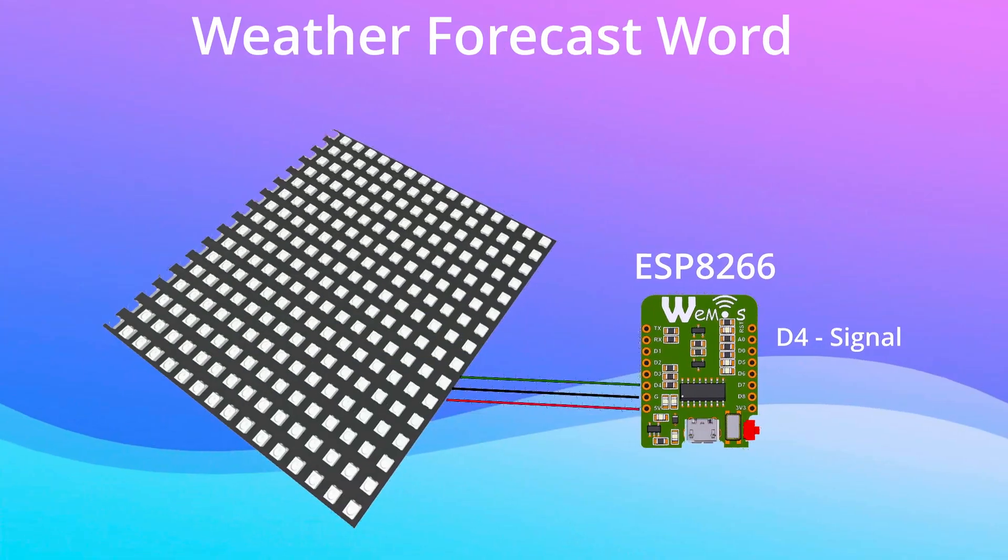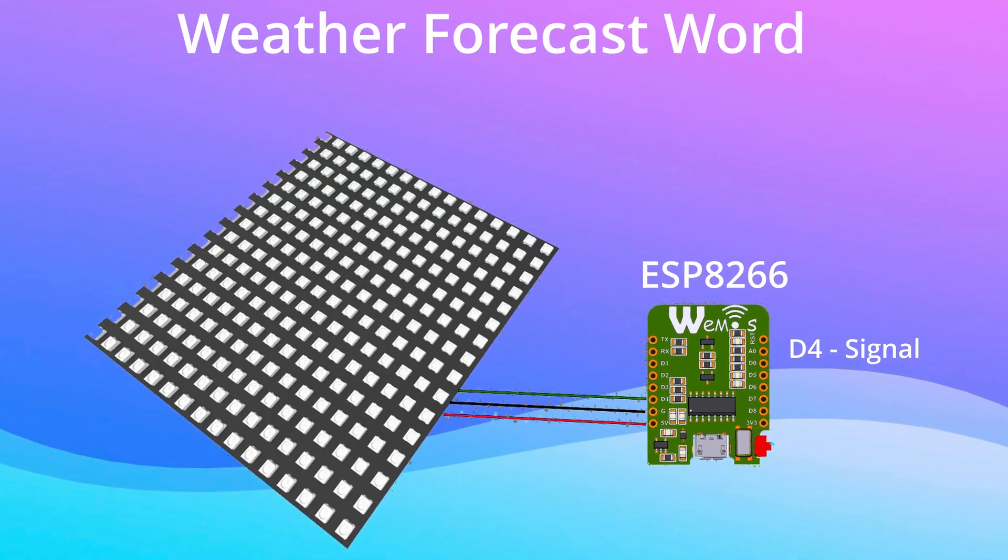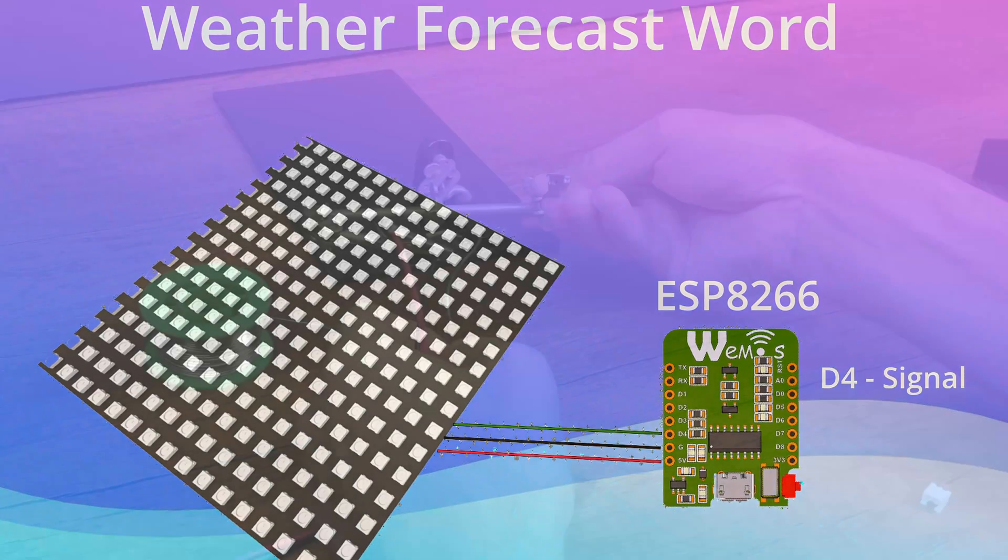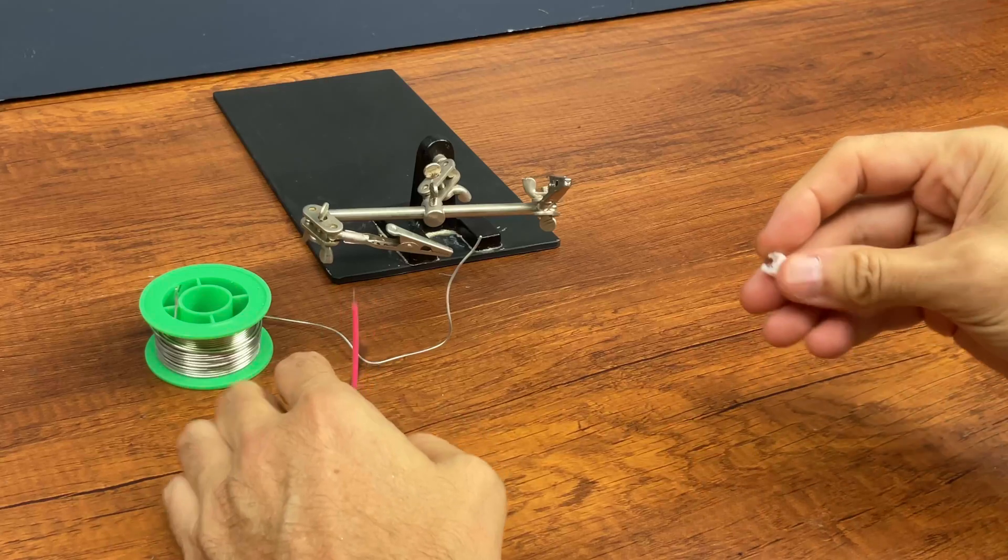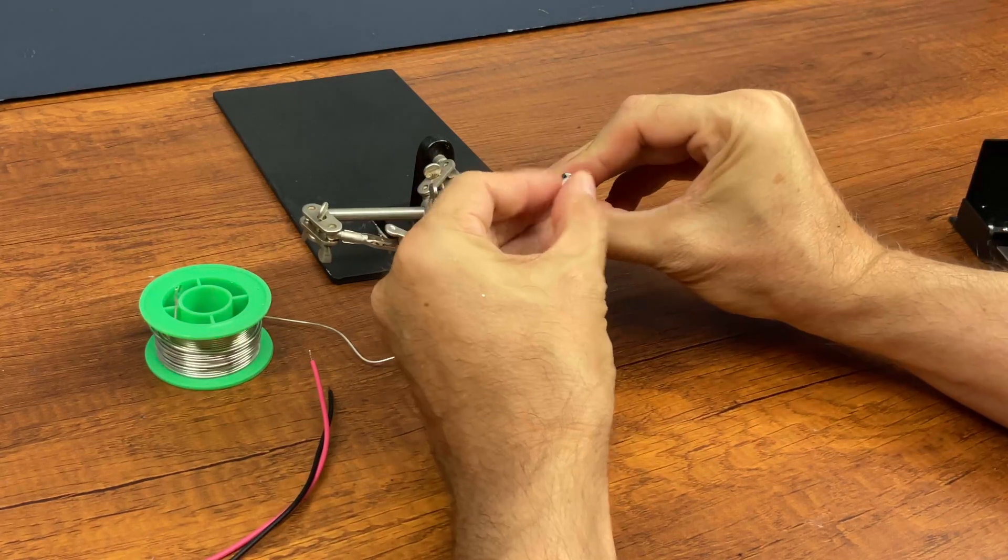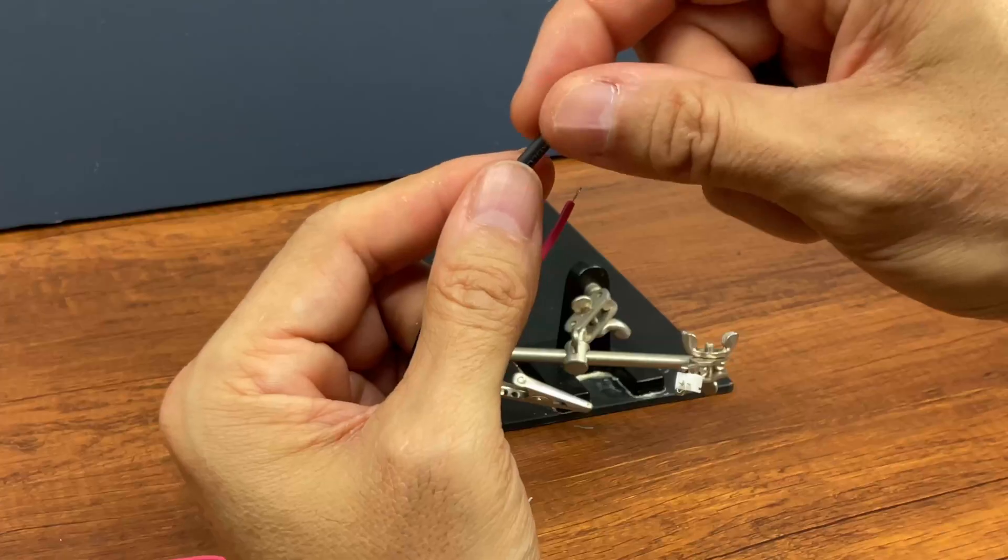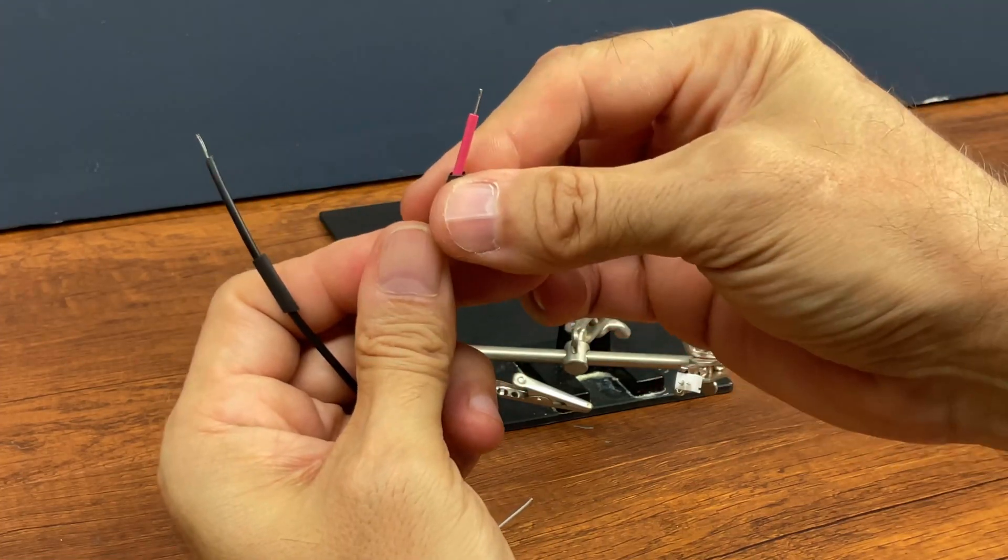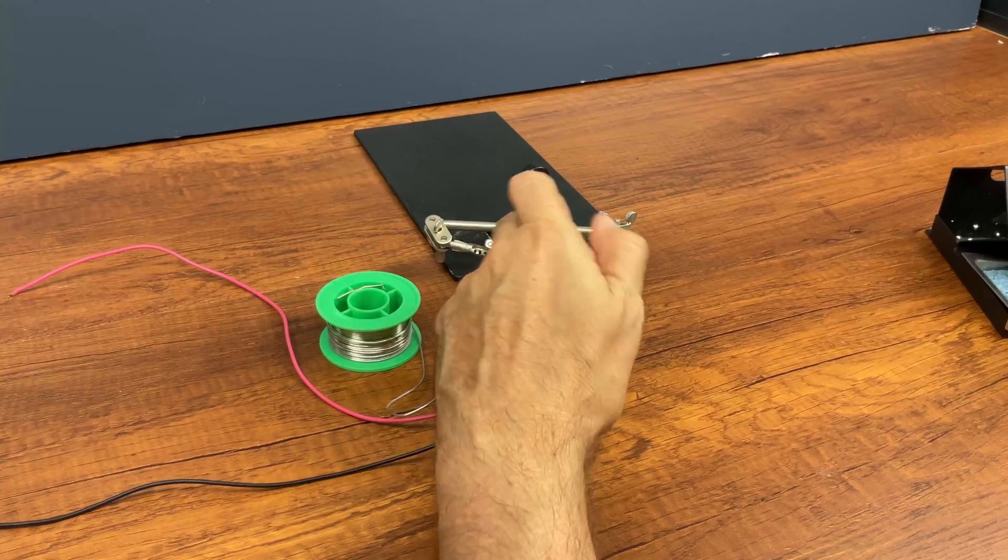Wire connections are super easy. Pin D4 of the ESP8266 must be connected to the input pin of the matrix. And now let's connect the wires of the GST connector. We only use two wires, GND and 5V, because we will program the microcontroller first.